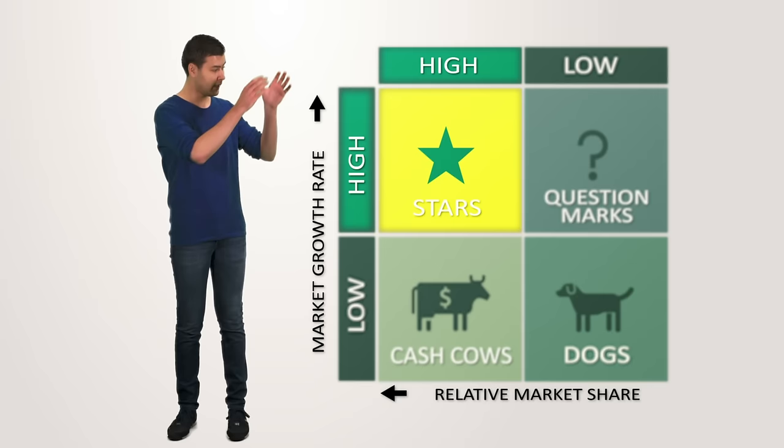And dogs are in the decline phase, the final stage of the cycle when sales begin to fall. Of course, if your SBUs are failing to become stars or cash cows, they might end up as a dog sooner, regardless of the market conditions.